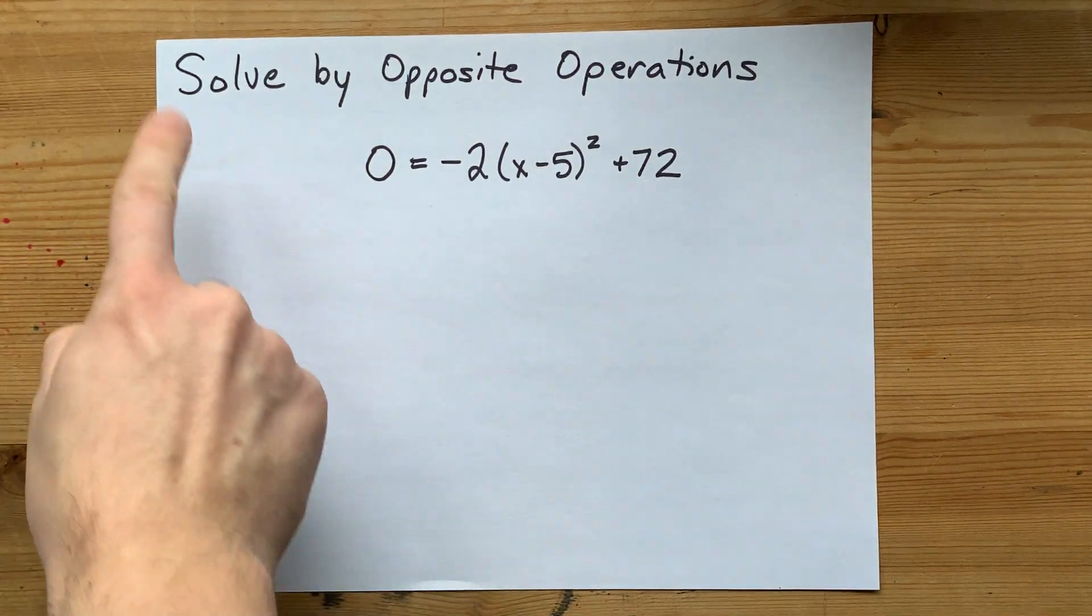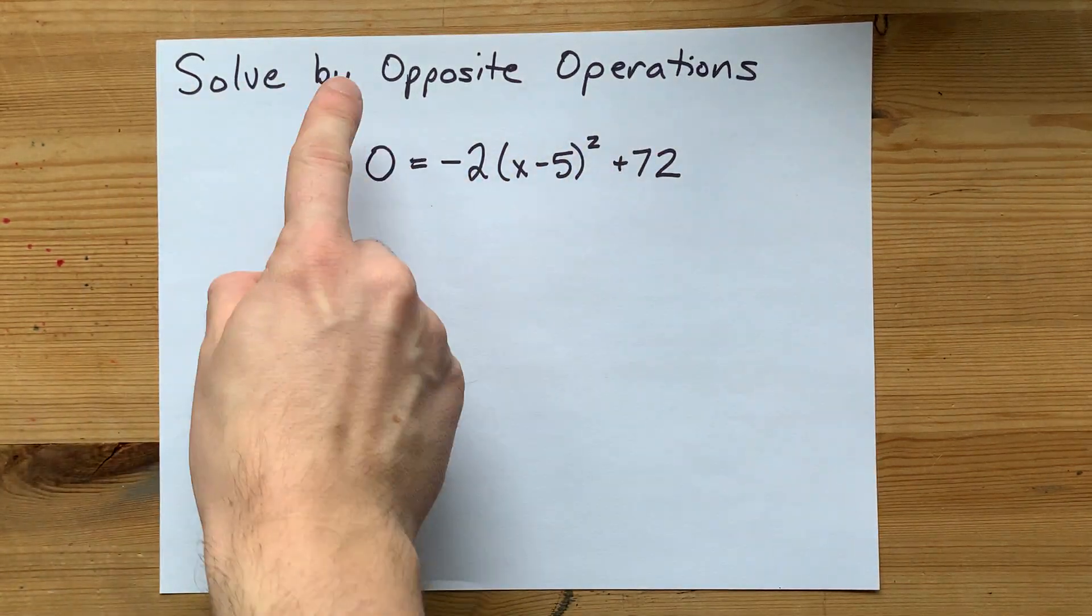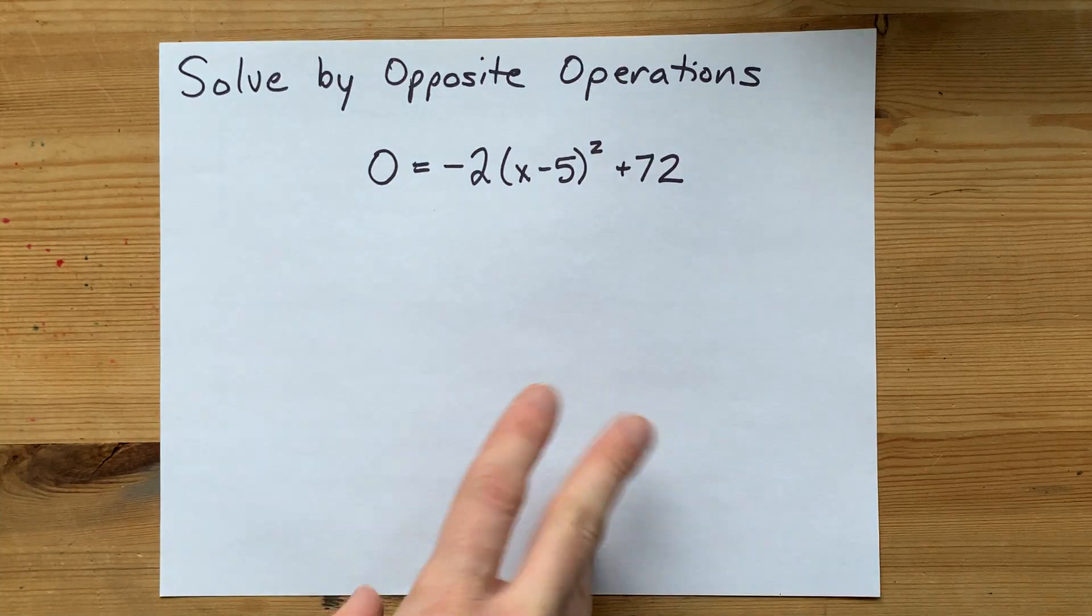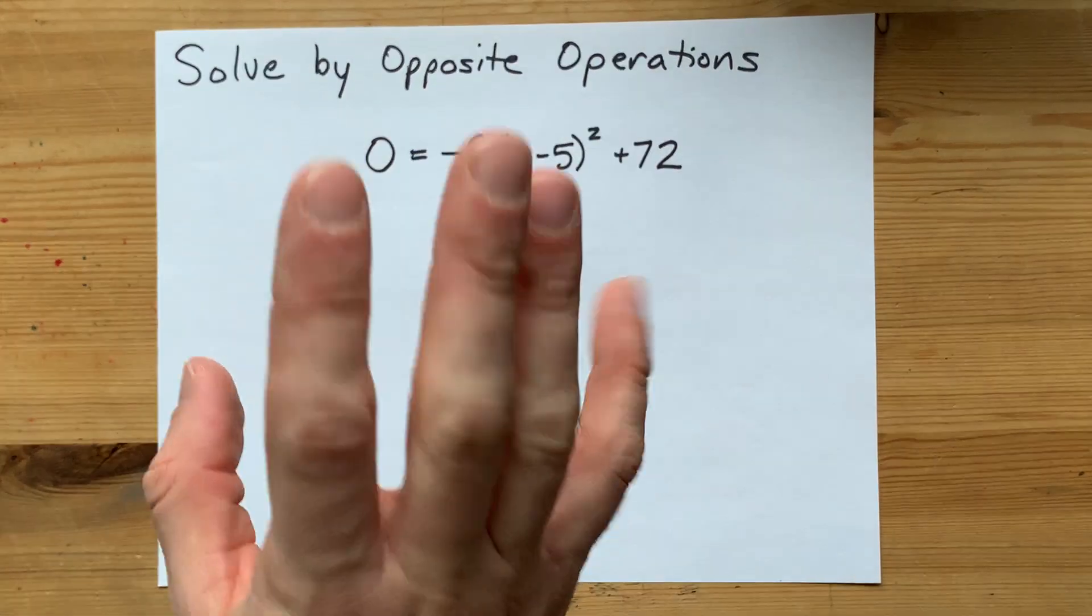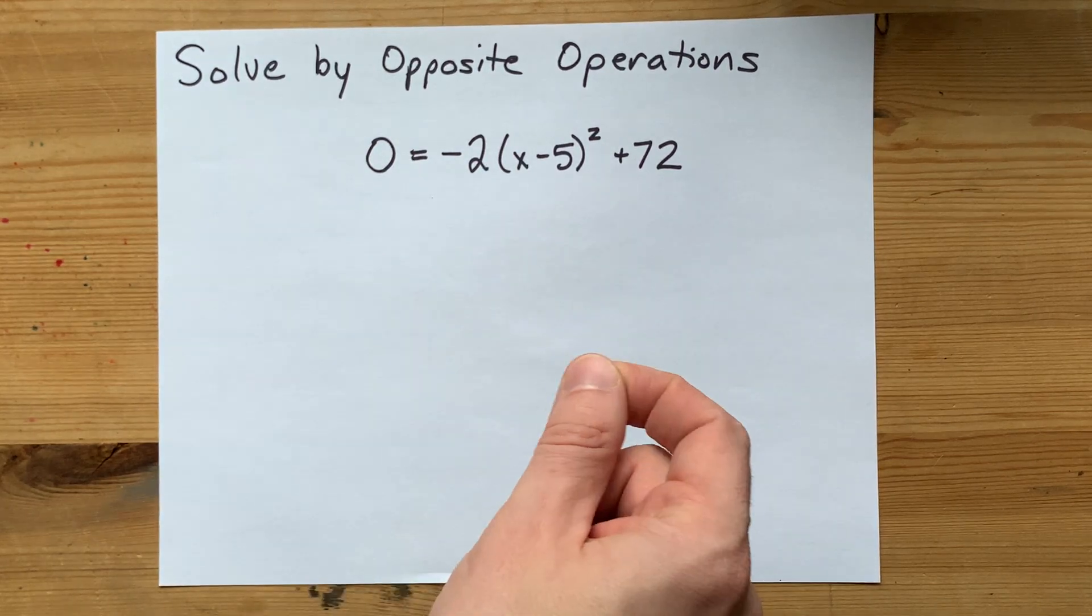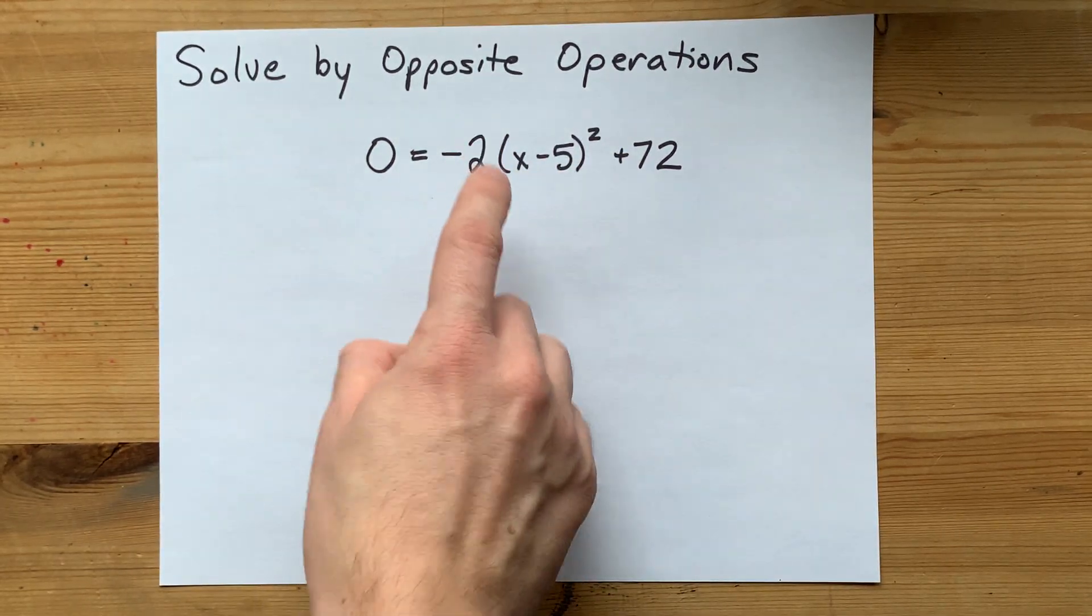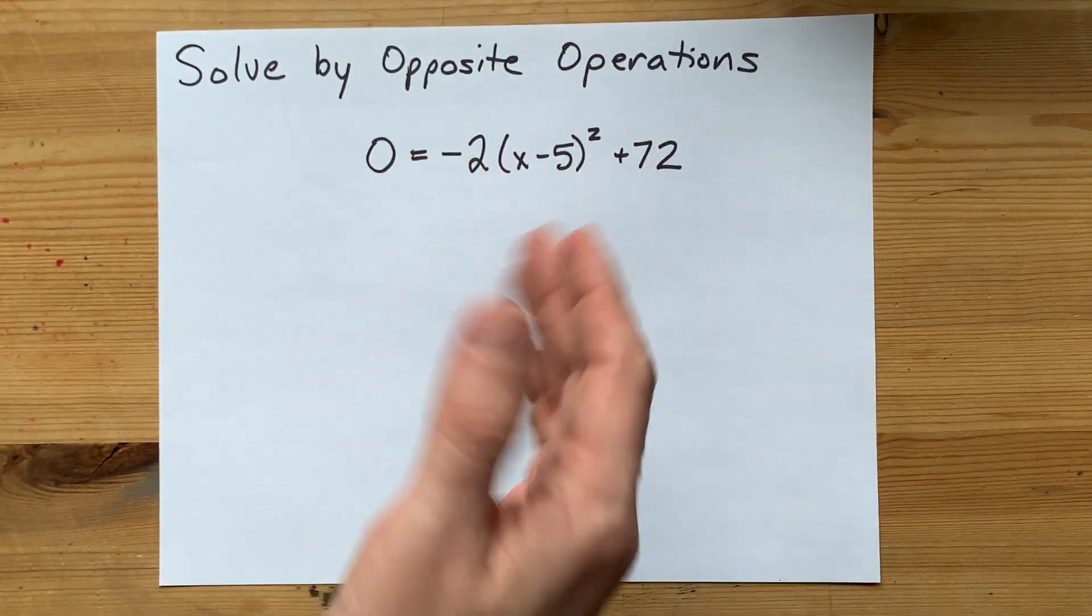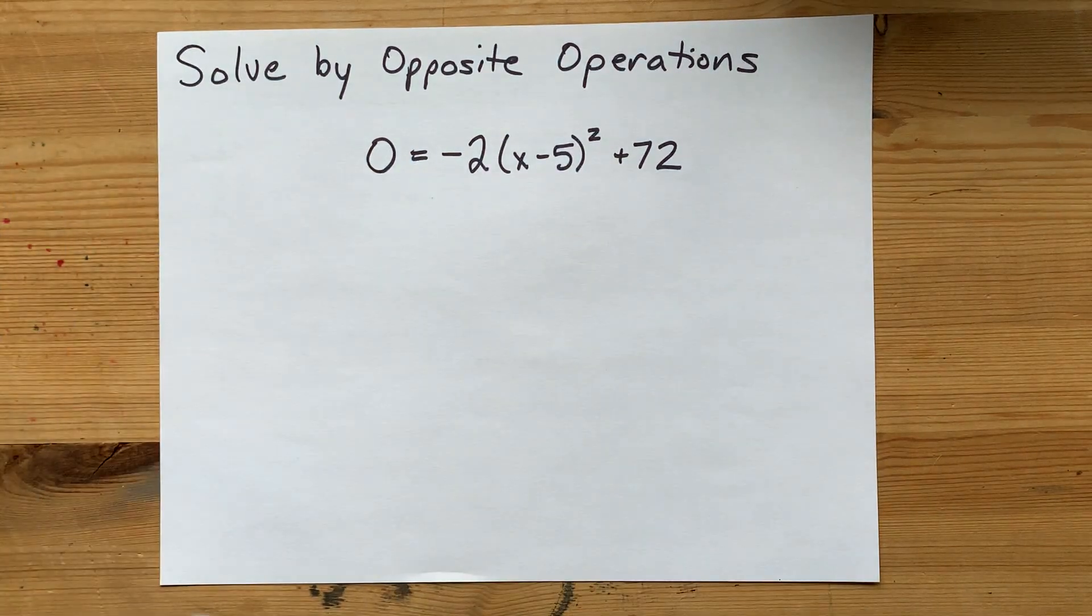If your teacher is asking you to solve a quadratic equation by opposite operations, I'm going to show you how to do it. The idea is we're trying to get x alone on one side of the equation. You're going to have to get at it by undoing things that are currently being done to it.